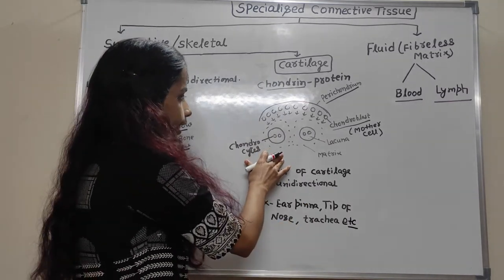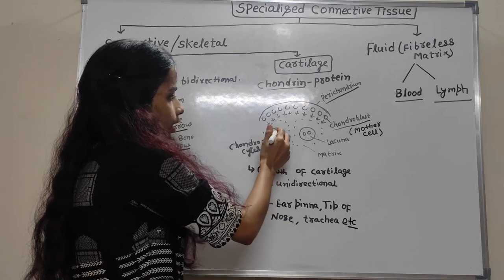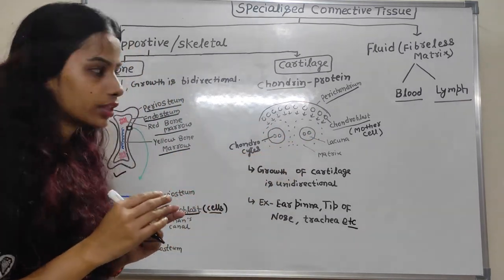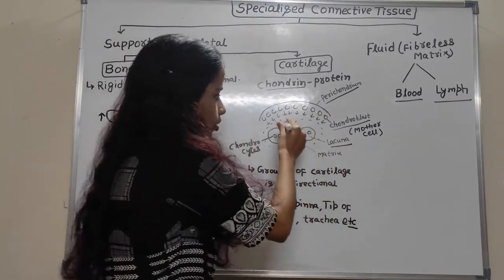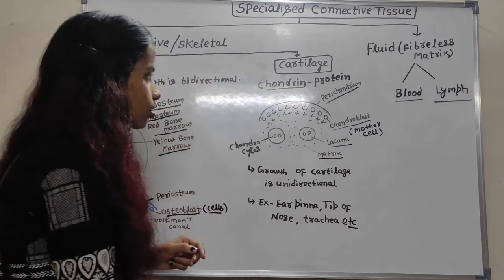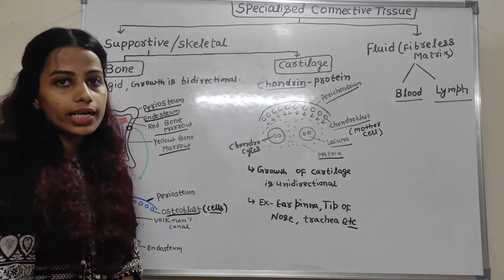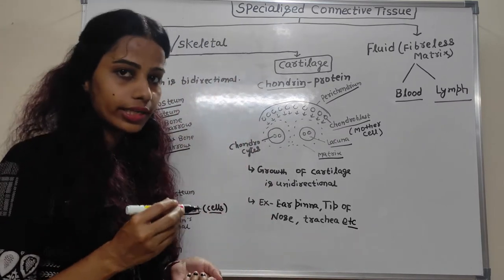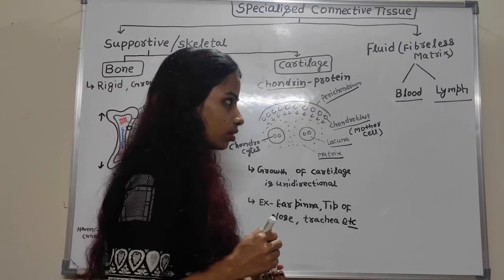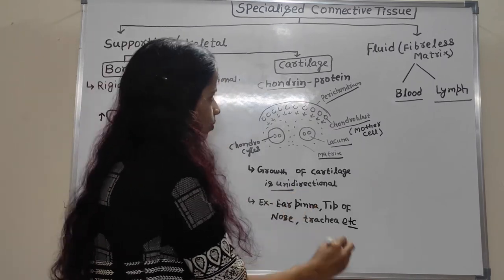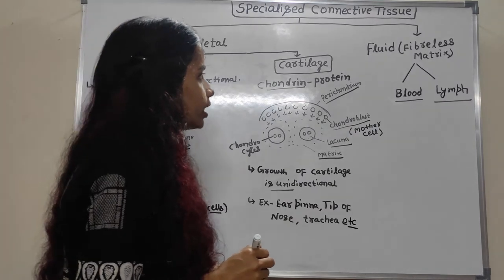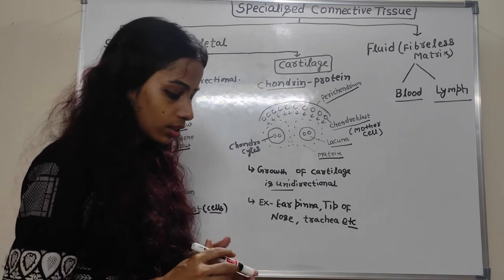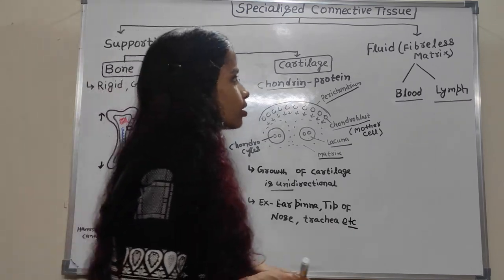Chondrocytes are arranged inside a circle. The matrix surrounding them is known as lacuna, and there is also outer matrix present. Regarding the growth of cartilage, it is unidirectional — meaning cartilage can grow only in one direction.